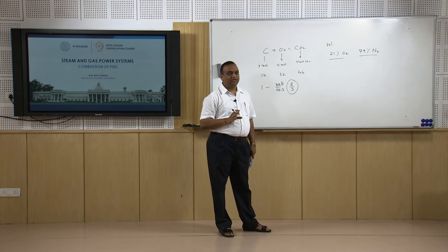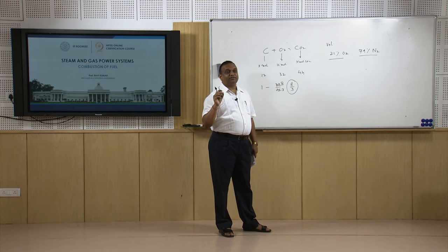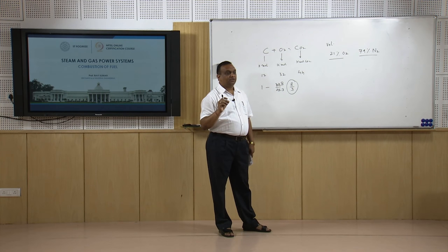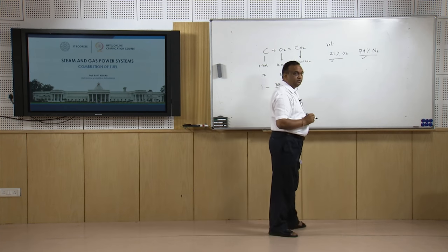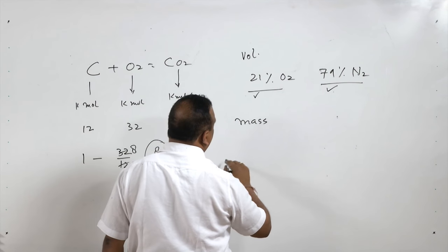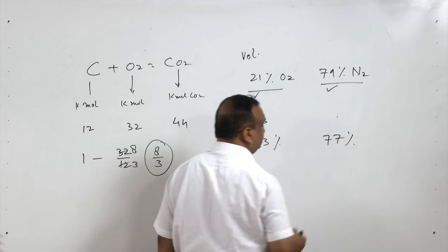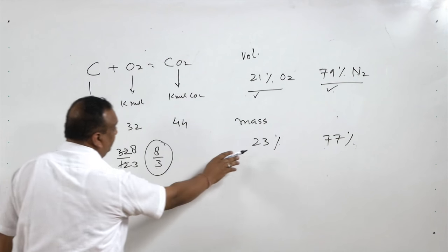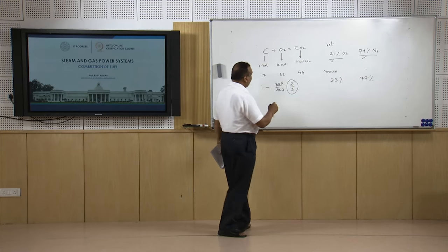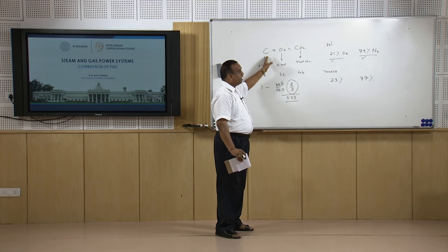Air is not a mixture of only nitrogen and oxygen — there are other gases like CO2 (around 300–400 ppm) and argon, but these are in traces and are neglected. Once we know how much oxygen is required, since oxygen is 23% of air by mass, we divide by 0.23 to get the amount of air required to burn 1 kg of carbon into CO2.